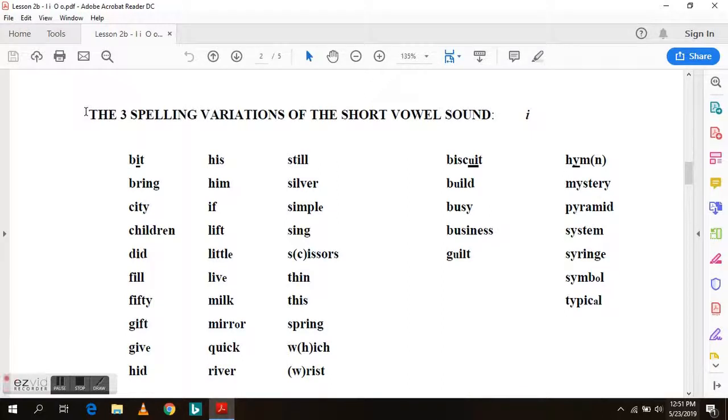The three spelling variations of the short vowel I. Written with a single I, with a UI and as a Y. Bit, his, still, biscuit, him, bring, him, silver, build, mystery, city, if, simple, busy, pyramid, children, lift, sing, business, system, did, little, scissors.